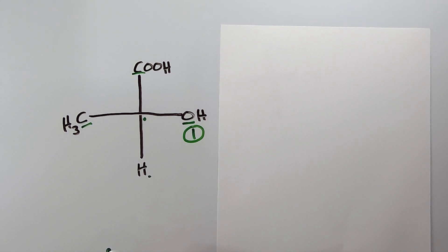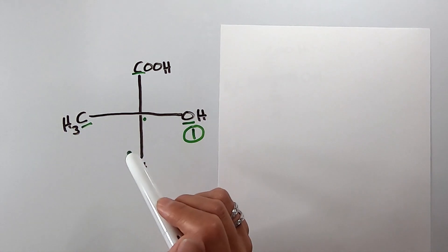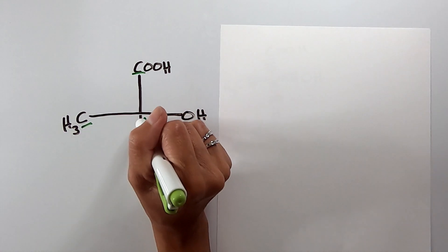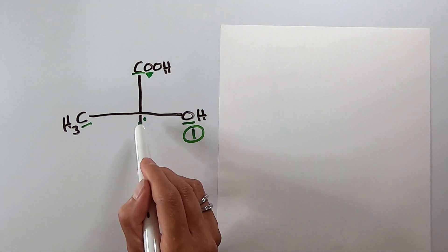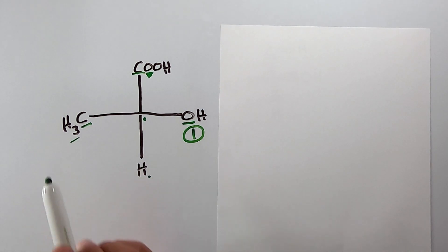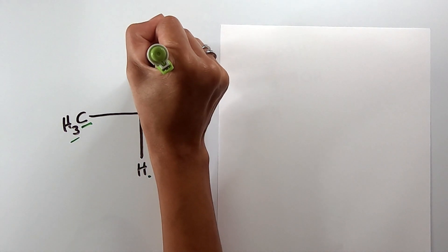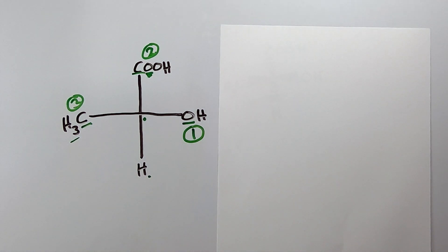To resolve the tie between the two carbon substituents, I go to the next attached atom in each direction. Going one way, the next attached atom is oxygen; going the other way, it's hydrogen. Oxygen has a higher atomic number than hydrogen, so that substituent gets priority two, the other gets priority three, and hydrogen remains priority four.